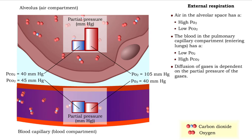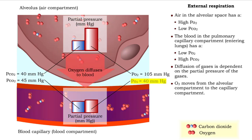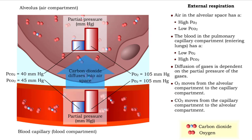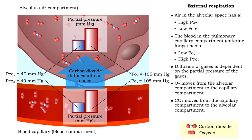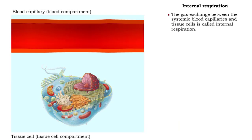Diffusion of gases is dependent on the partial pressure of the gases. Oxygen moves from the alveolar spaces into the blood, so blood leaving the lungs and flowing to the rest of the body is well oxygenated. Carbon dioxide moves out of the blood in the capillary compartment into the alveolar air spaces and is removed from the body at the next expiration.